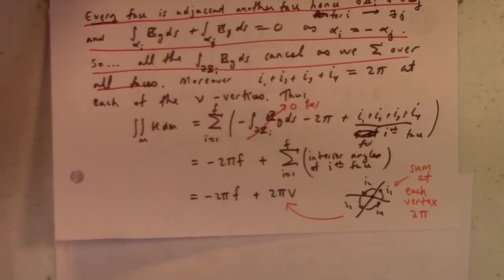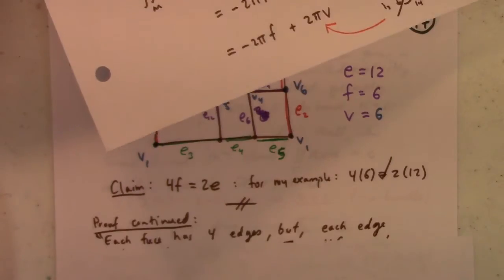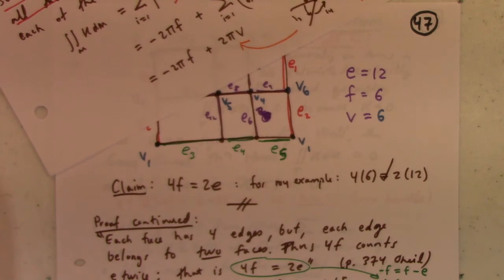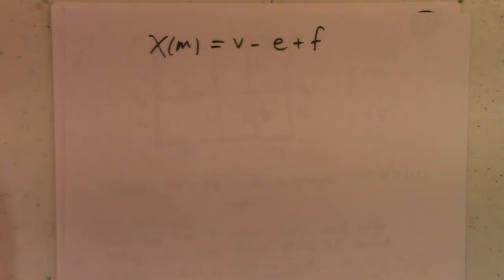How does that work out? We'll find the formula here. Come on, where'd you go? So the Euler characteristic is V minus E plus F. I should know that by now. Oh well.